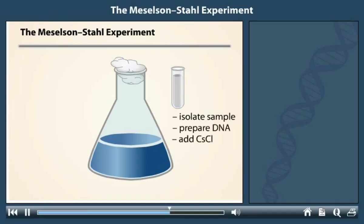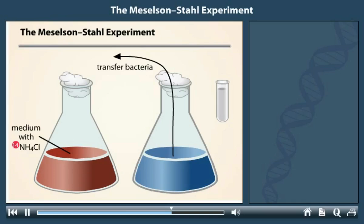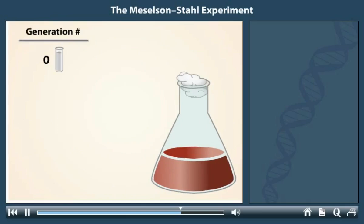At the same time, some of the bacteria were transferred to N14 light medium and allowed to continue to grow. From this point onward, newly replicated DNA will be made with the light form of nitrogen. They called their first sample Generation Zero. After the transfer to light medium, a sample was taken every 20 minutes, which is the generation time for E. coli cells growing at their optimal temperature.